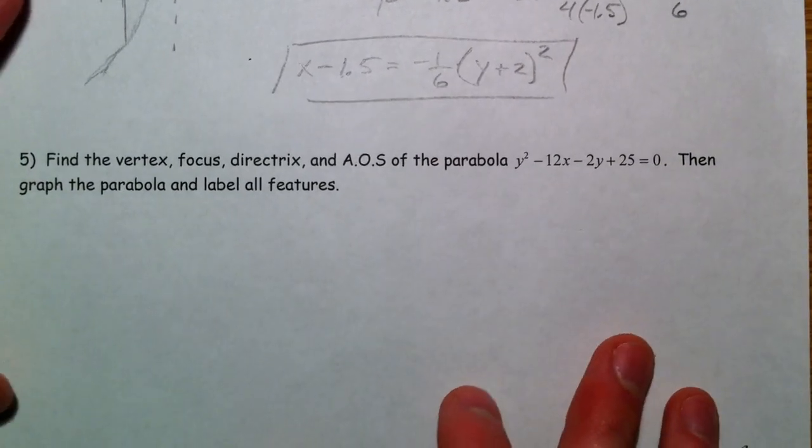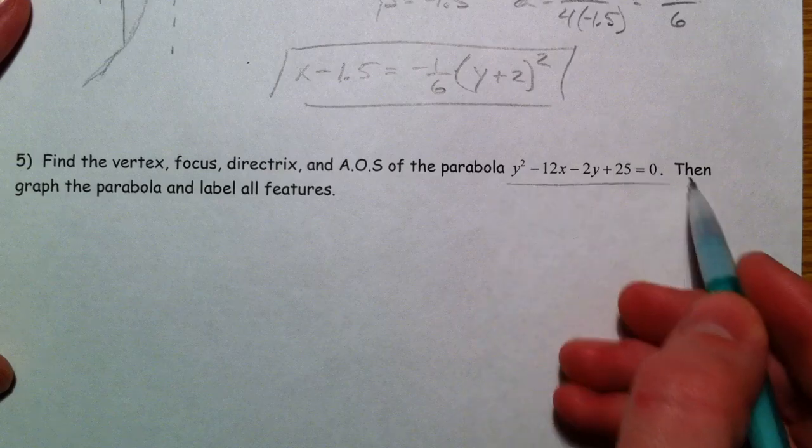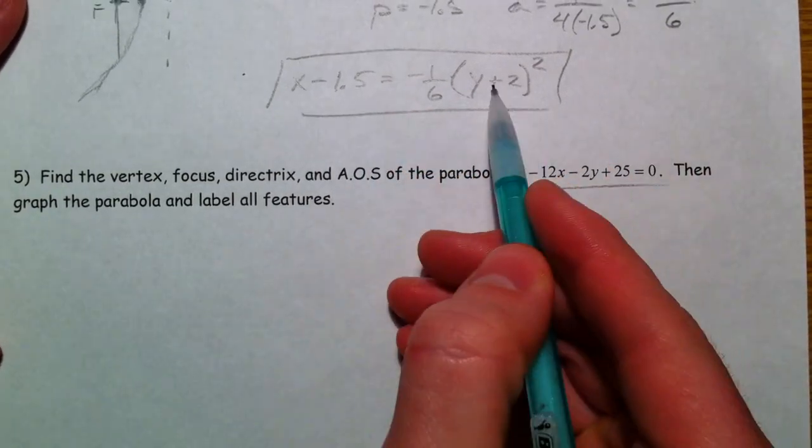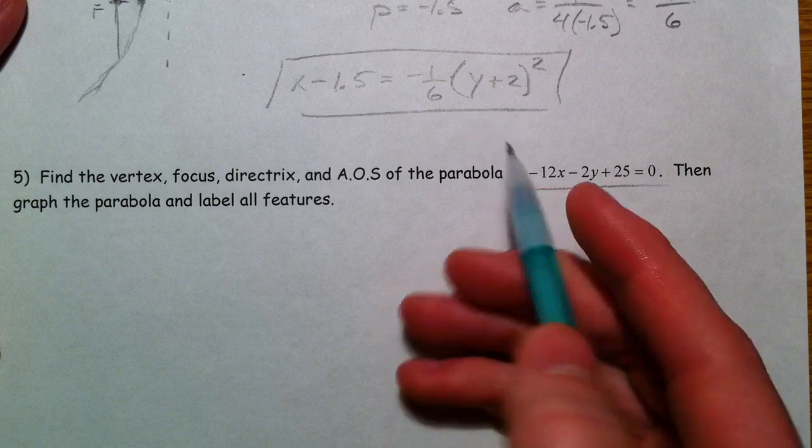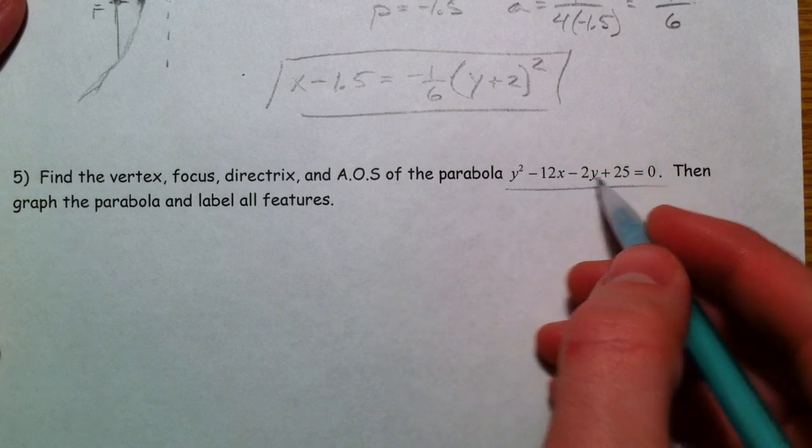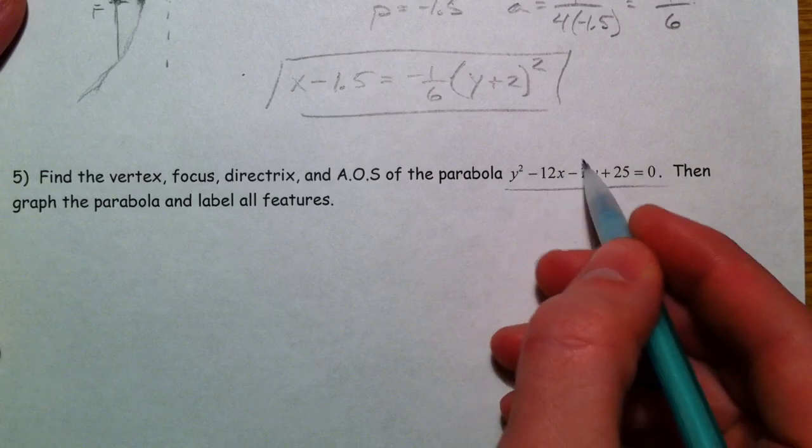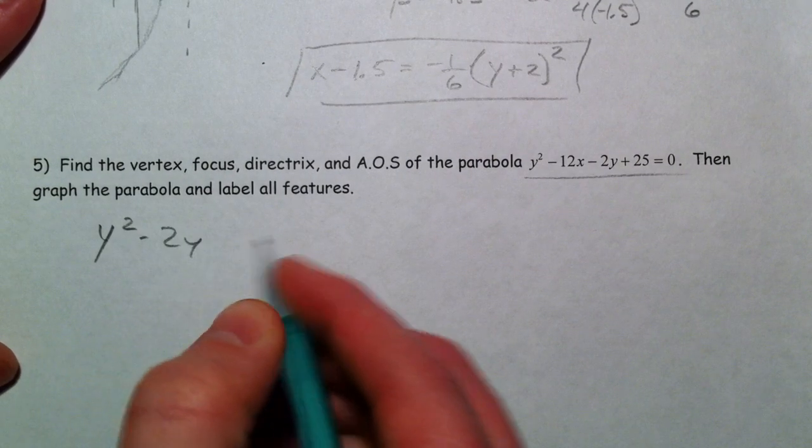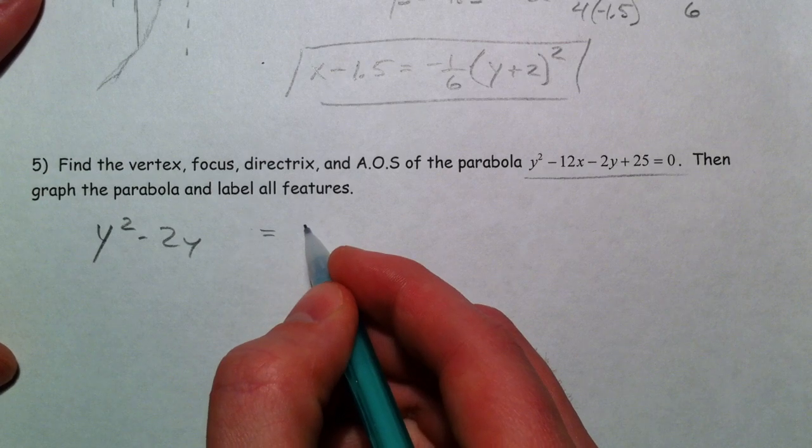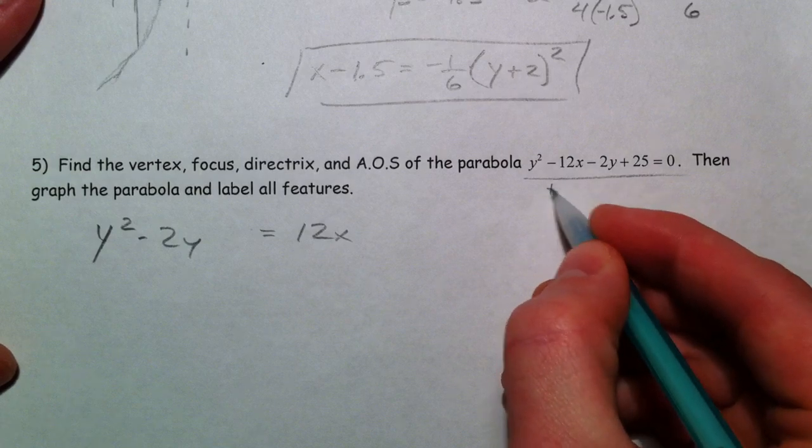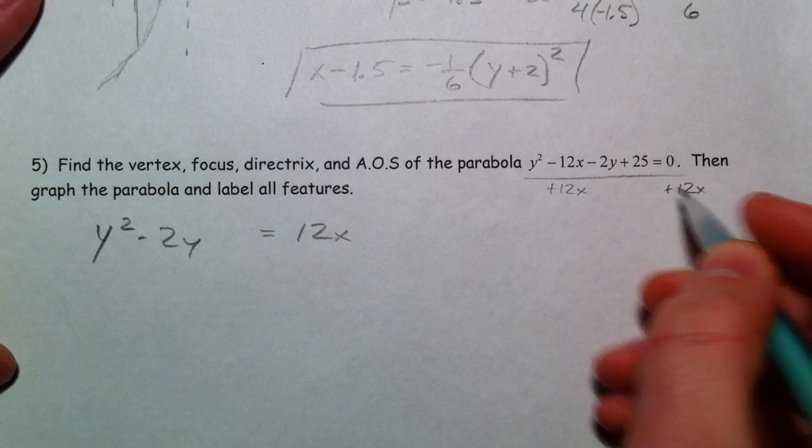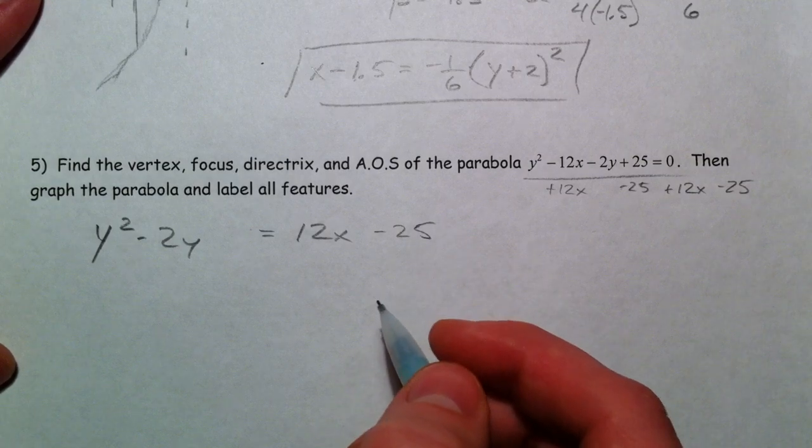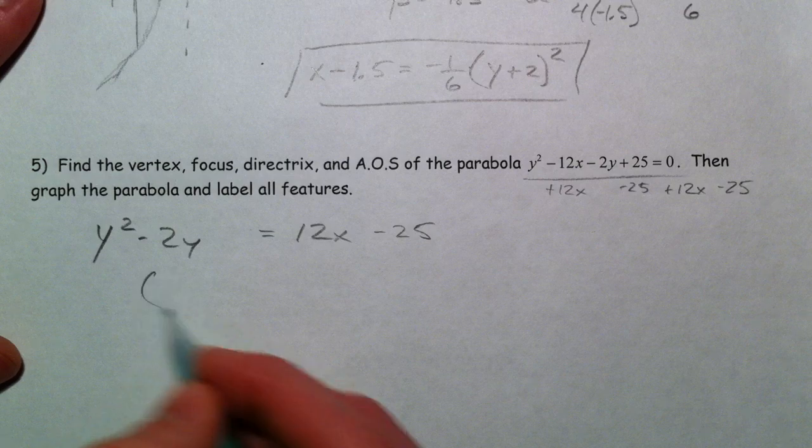Find the vertex, focus, directrix, and axis of symmetry of this parabola. Well, I need to get it into this form. I need to have something squared. That's our ultimate goal. So I'm going to move all the stuff that doesn't have to do with the y to the other side. y squared minus 2y equals... I'm going to add the 12x, and so it becomes positive on the other side. I'm going to subtract the 25, and so it goes to the other side as well.